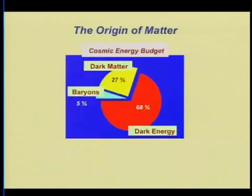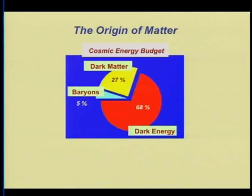To put that in context, let me start with the pie chart of the energy density of the universe. About 5% of the energy is baryonic matter — what we're made out of — 27% is dark matter, and 68% is the dark energy.